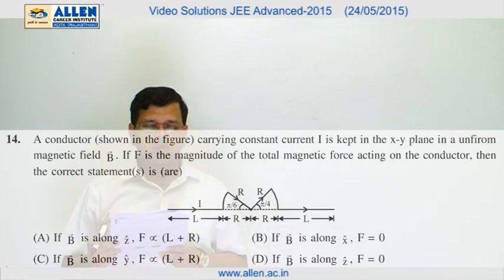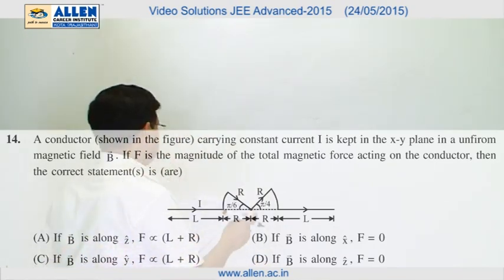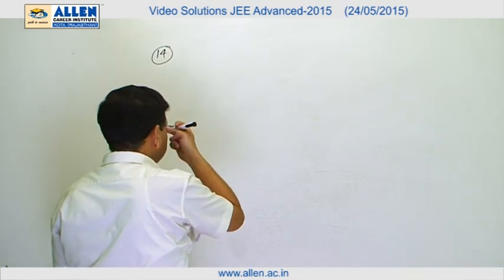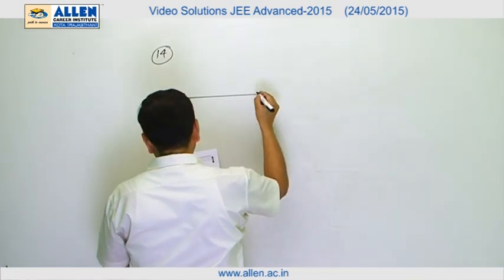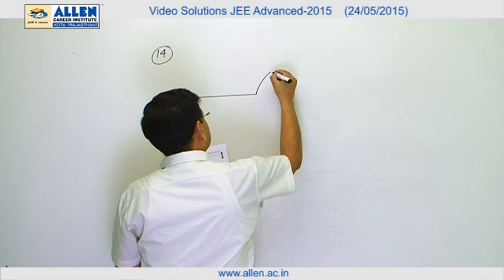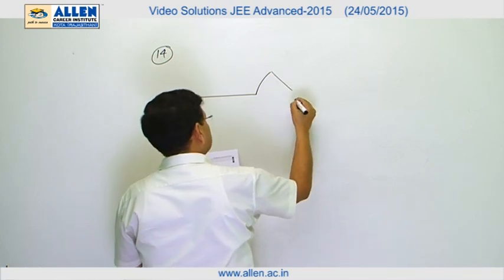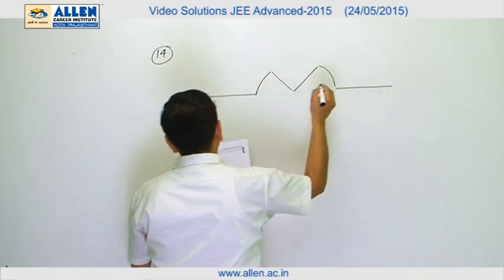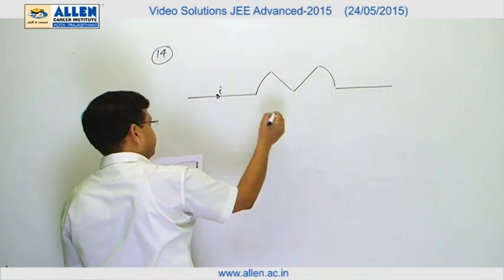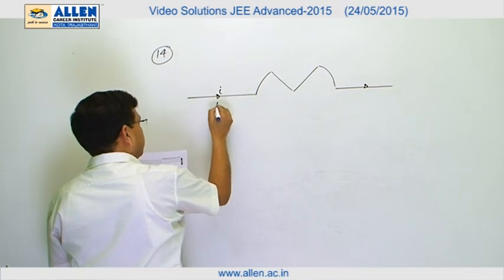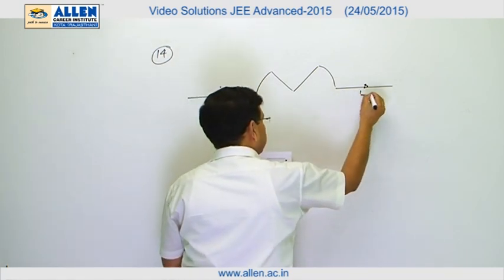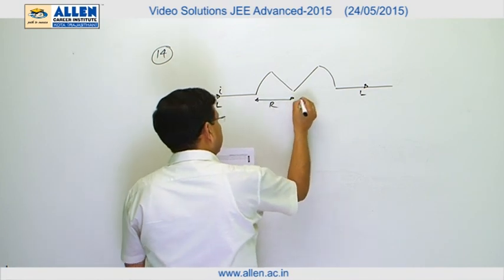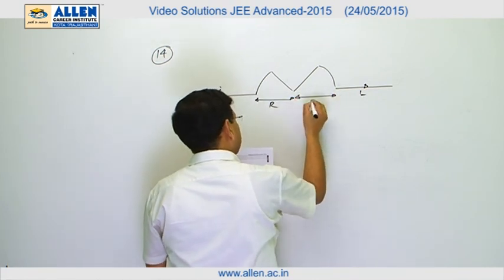Paper 1, question number 14. In this, a conductor given like this is carrying a current i. This part has got length l, this has got length l. This radius is given out to be r and this one is given out to be r.